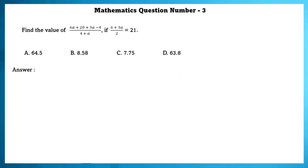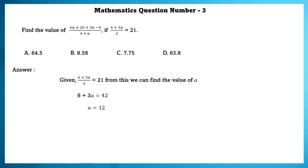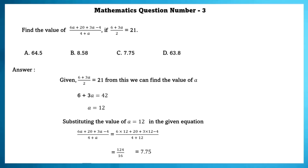Mathematics question number 3. Find the value of 6A plus 20 plus 3A minus 4 by 4 plus A, if 6 plus 3A by 2 is equal to 21. Given 6 plus 3A by 2 equals 21, we find A equals 12. Substituting A in the given equation, we get 124 by 16. Since all options are in decimal, we convert the answer to 7.75.